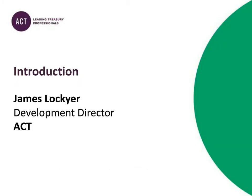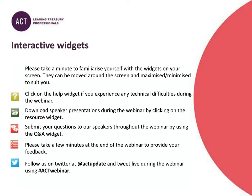I'm James Lockyer, Development Director here at the ACT. Just before we start, I thought I'd explain some technical points about our webinar setup. There's a menu bar across the bottom that allows you to open various windows, and you can move these around your screen, resize them, or minimize them. The green button with a question mark is for help if you have any technical difficulties, and another button opens the Q&A window. You can send in questions by typing in that Q&A window — don't wait until the end. We will deal with them at the end of the presentations, and our practice is that we don't disclose any names. A recording of this webinar will be available on the ACT website in two days' time, along with a separate copy of all the slides.